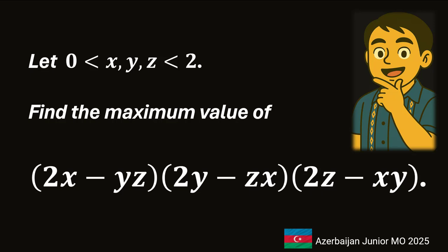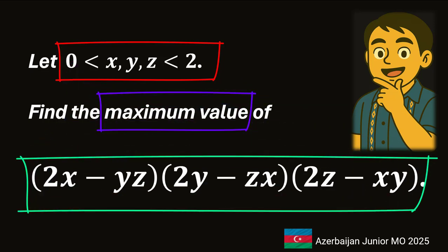Let x, y, and z be real numbers such that 0 is less than x, y, and z, and all of them are less than 2. Find the maximum value of the expression (2x minus yz) times (2y minus zx) times (2z minus xy). This problem appeared in the Azerbaijan Junior Math Olympiad 2025.